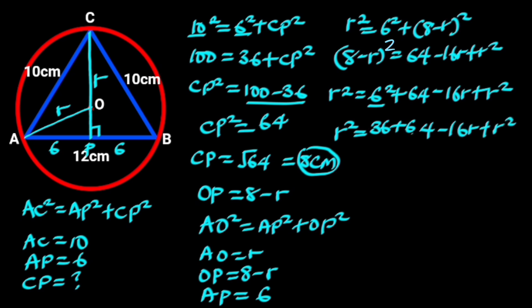Next, R square minus R square is 0, and 36 plus 64 is 100, and we are left with 0 is equal to 100 minus 16R.